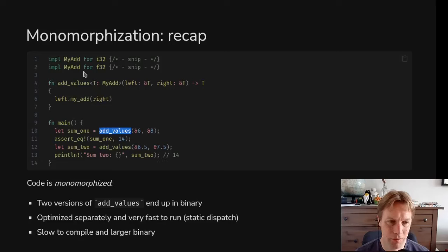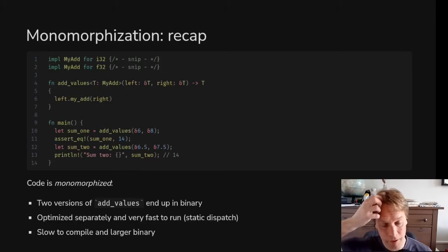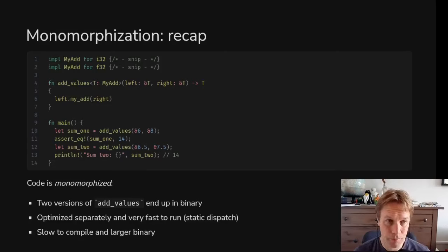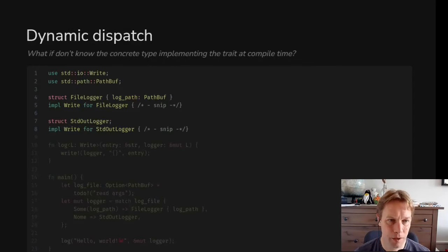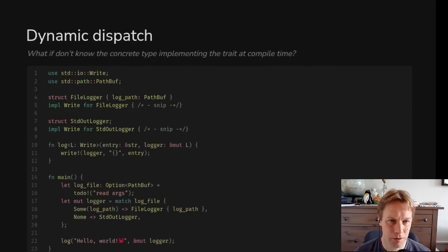However, because it's generating two copies of `add_values`, it's going to take twice as long to compile them, and they're both going to end up as code inside your binary, so the binary will be a bit bigger. But generally this is a good thing to do when you can, because you don't waste any runtime. But that's not always possible, so let's look at an example where it doesn't actually make sense.